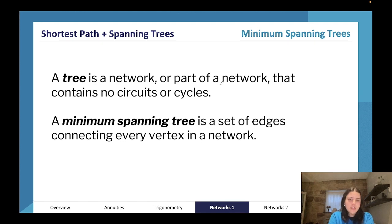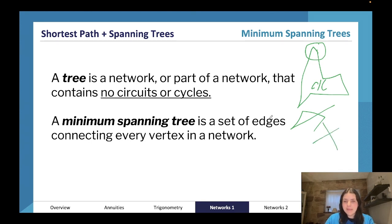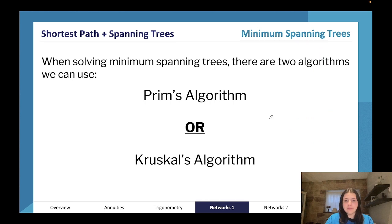A tree — when we talk about spanning trees — is a network or part of a network that contains no circuits or cycles. If you look at a network and it's closed, that would be a circuit or cycle. If it's open like a branching structure, that's a tree. A minimum spanning tree is a set of edges that connects every vertex in a network. To solve minimum spanning trees we can use two different algorithms: Prim's or Kruskal's.